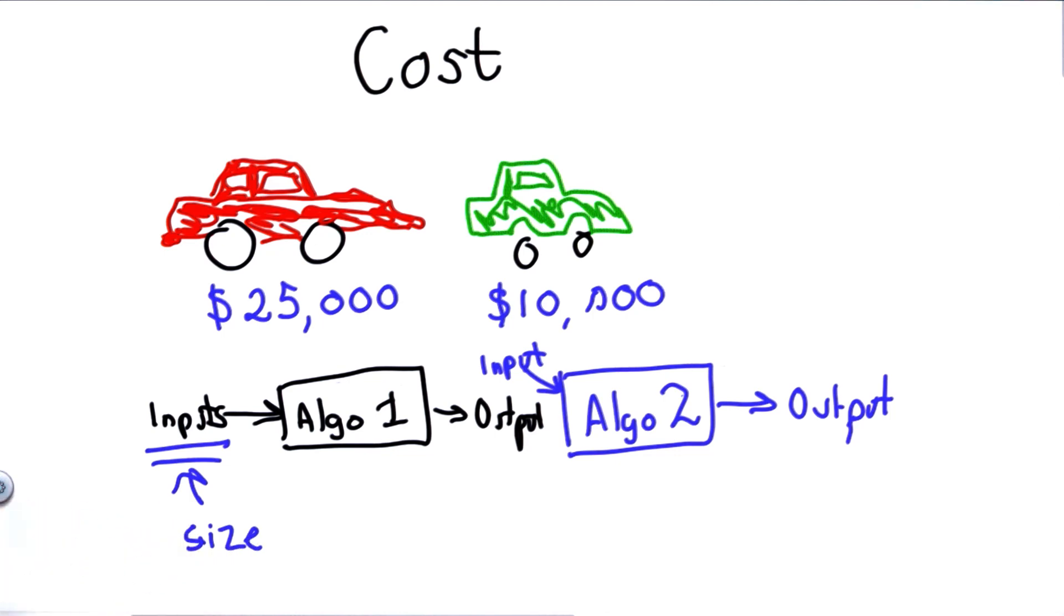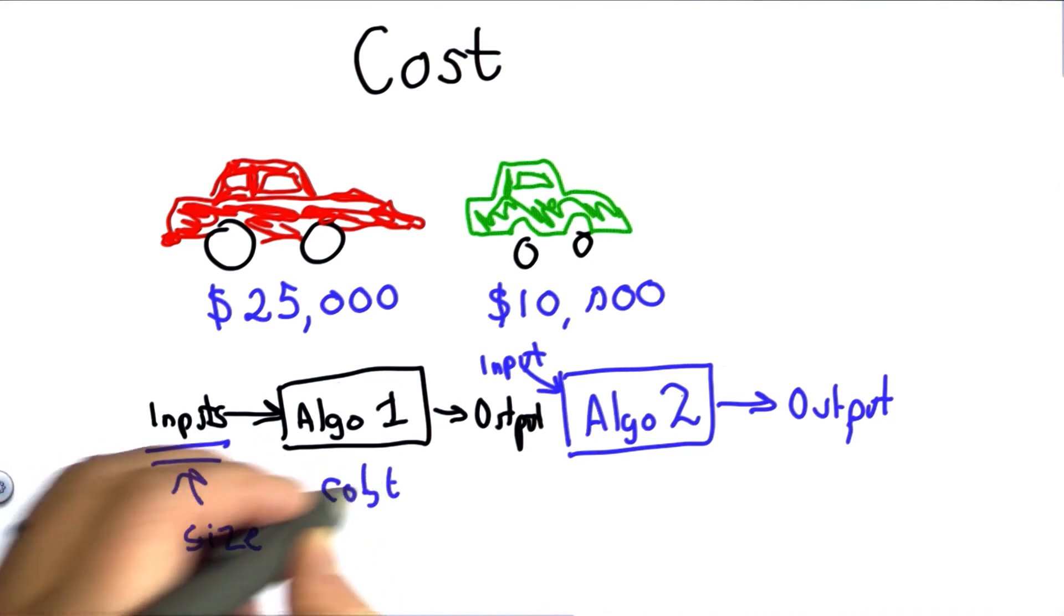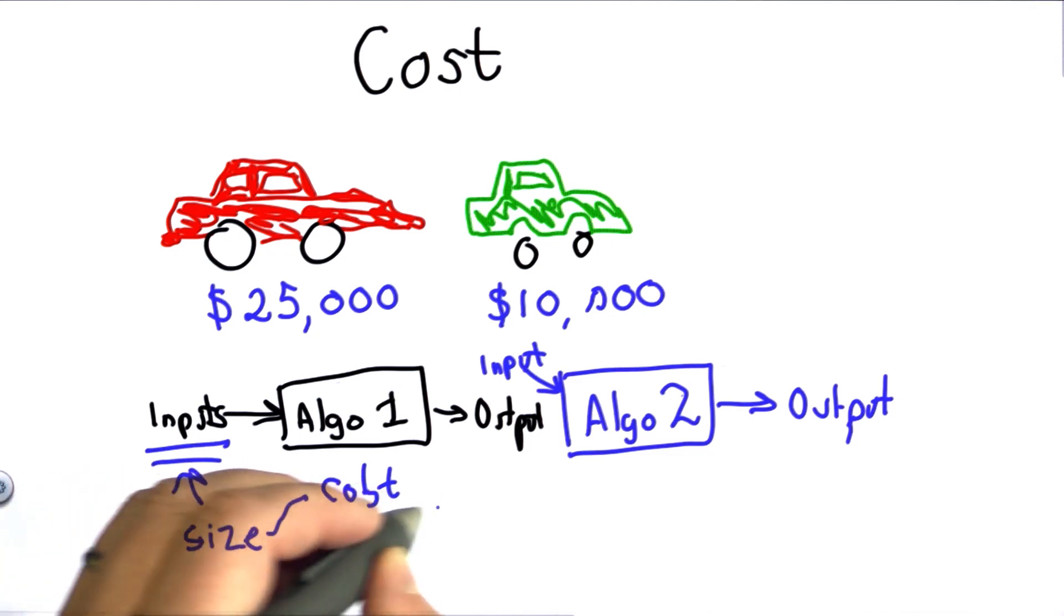The main thing that's going to matter about the input is the size of the input. That's not always going to be the case, and we'll see examples where other properties of the input matter. But the primary way that we talk about cost in computer science is based on the size of the input. As the size of the input increases, how does the cost to evaluate the procedure increase?